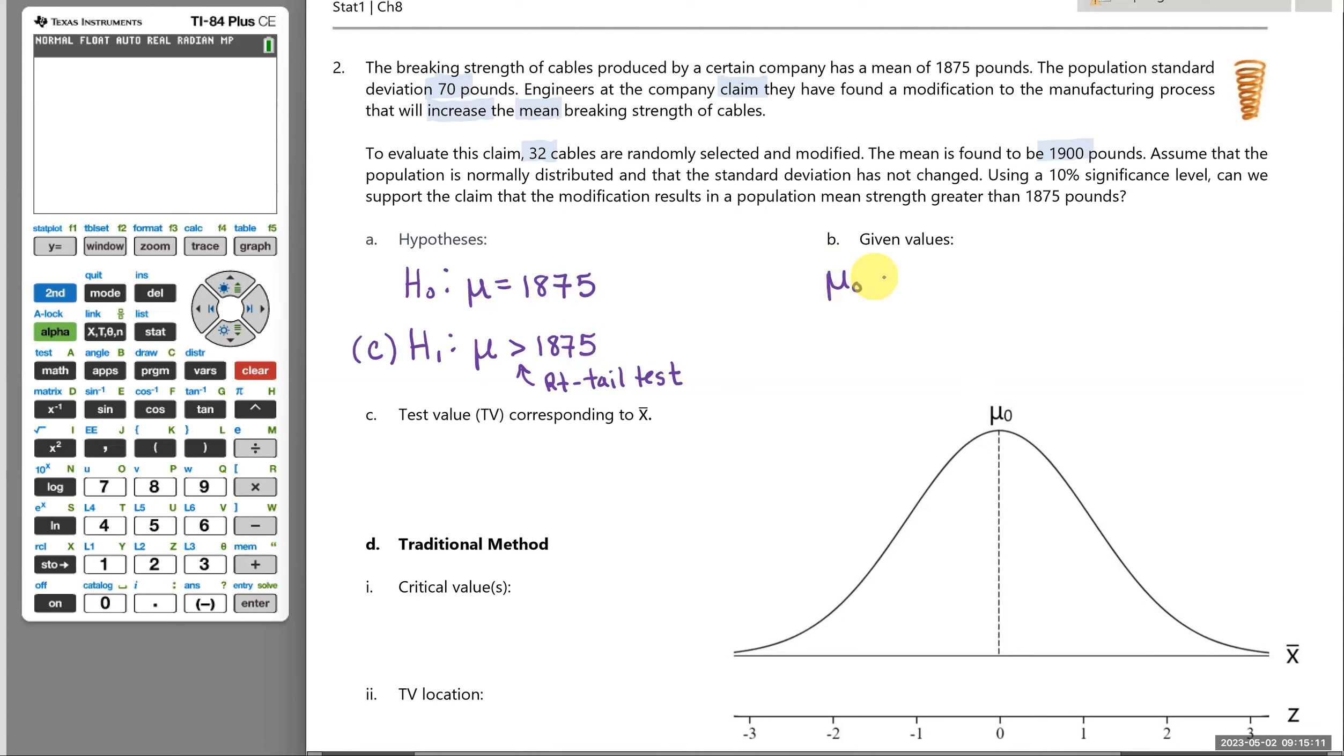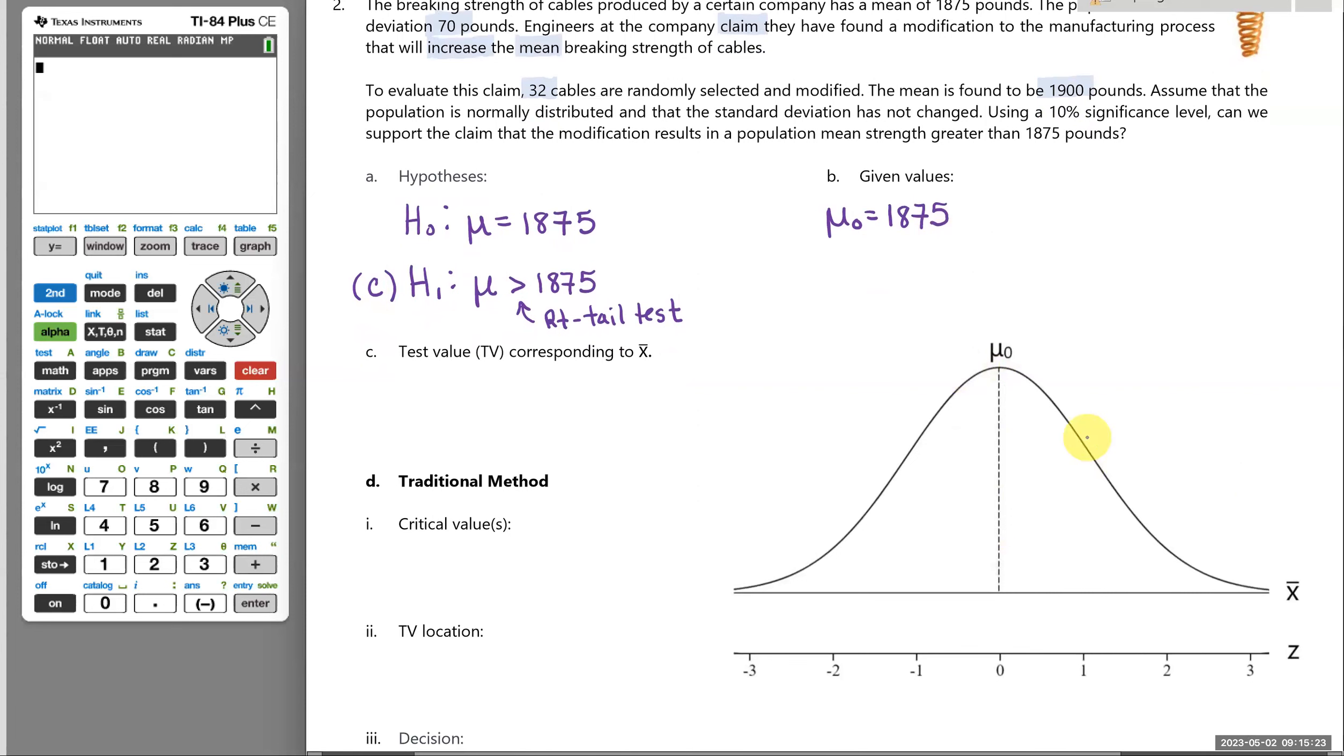The null hypothesis will be that the population mean remains 1,875 pounds. So as always, in hypothesis testing, we start with assuming the null is true, and then we gather evidence to see if we find evidence against it. So that's why we're always drawing a picture of the null hypothesis. The mean is 1,875, and then we'll go out and get some data to see what evidence it provides. So they go out and they take a look at 32 cables that they modify.